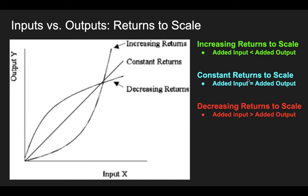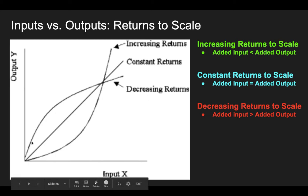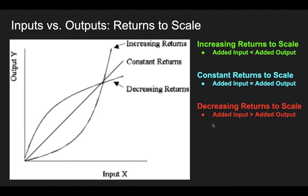With constant returns to scale, there is a constant increase in output as we add more input — a constant return on our investment, so to speak. And then finally, decreasing returns is just the opposite. As we add input, we have to add a lot of inputs just to get a little bit of output. So we're getting decreasing returns from the workers that we're hiring. You can see here at the beginning of this curve we were getting increasing returns, but then it started to flatten out because we're experiencing decreasing returns. So returns to scale is a way to compare input and output.